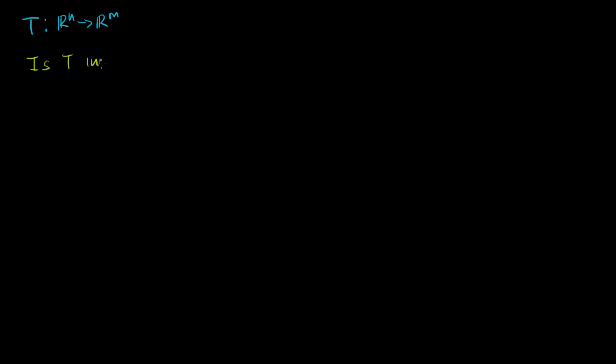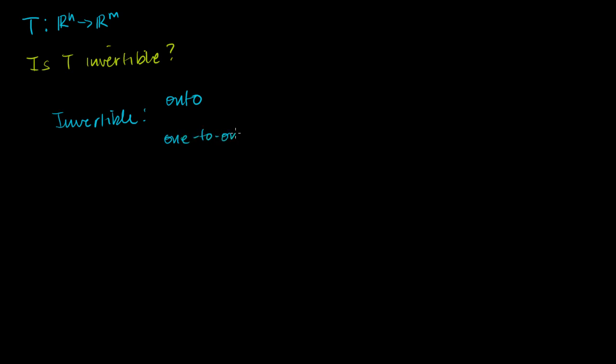The whole premise of the last series of videos was trying to figure out whether some transformation T — a mapping from Rⁿ to Rᵐ — is invertible. We showed that a function, or transformation, is invertible if it meets two conditions: it has to be onto, meaning it maps to every member of your codomain, and it also has to be one-to-one, meaning every member of your codomain is mapped to by at most one member of your domain.